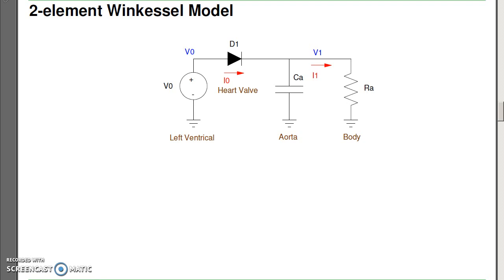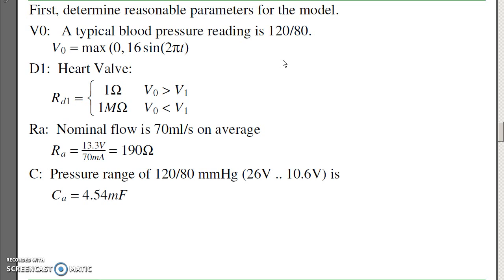The capacitance should be such that it absorbs the flow from the heart and has the pressure go from about 120 to 80 over 1/60th a second for 60 beats per second. So if the typical blood pressure is 120 over 80, I can model that as just a half-rectified sine wave. The valve I'll model as a time-varying resistor. If blood is ejecting, the resistance is very low. If blood is trying to go backwards, the valve closes and the resistance is very high. The RA is the resistance to allow nominal blood flow. I've got 13.3 volts near the nominal blood pressure at 70 milliliters per second, which gives me 190 ohms. And the capacitance is just set so that the pressure goes from 120 to 80, or 26 volts to 10.6 volts in one second. It gives you 4.5 millifarads.